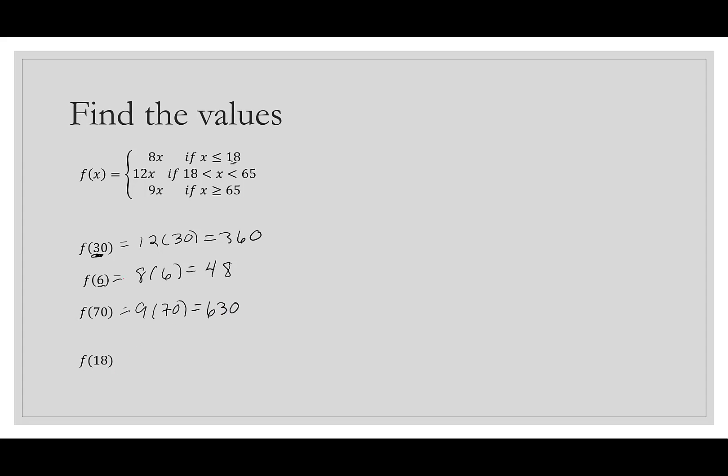And then 18. See how 18 appears twice? I can see it in the first line and in the second line. What you want to watch for is where does it say equal? It says less than or equal to 18 in the first line, which says we're going to do 8 times 18, which gives us 144. So when you're doing this, one input, one output. You start by saying where is x? And then that's where you plug it into that particular line, so I should only have one answer for each of these.